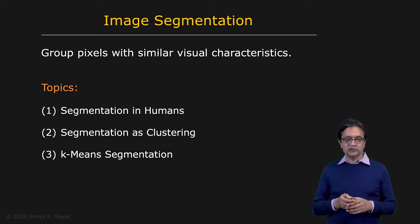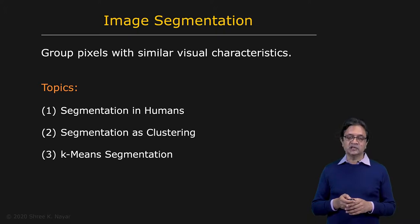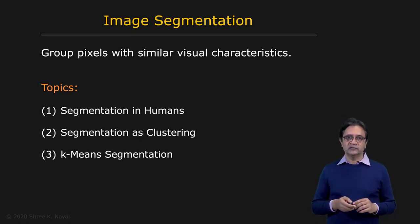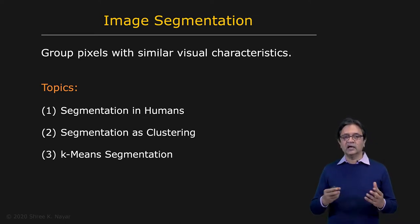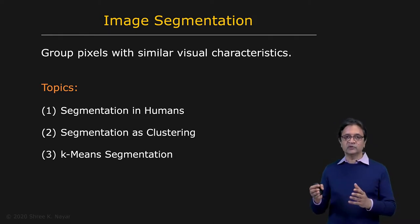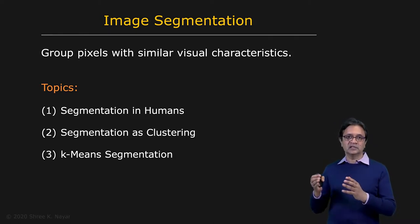The first algorithm we talk about is called k-means segmentation. In this case, you specify the number of regions you're looking for — k — and the algorithm then finds these k clusters for you, which correspond to k segments.